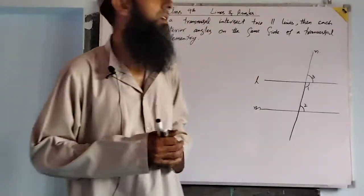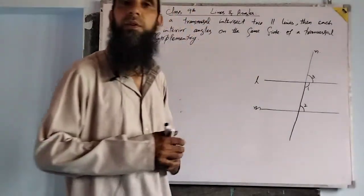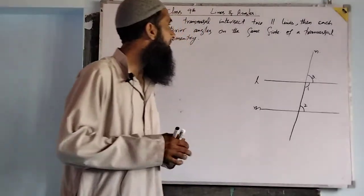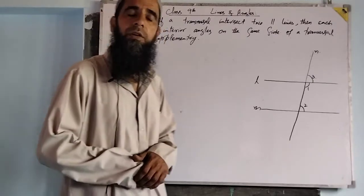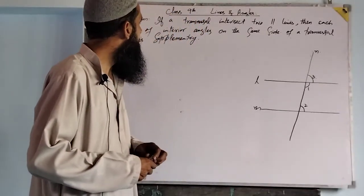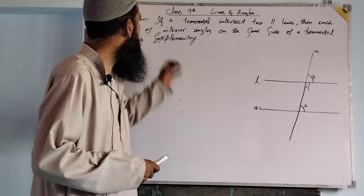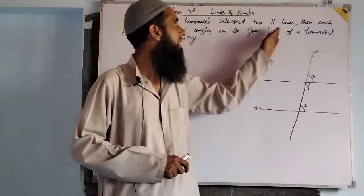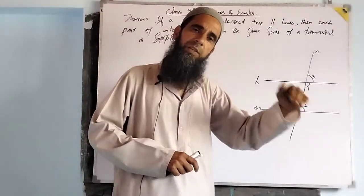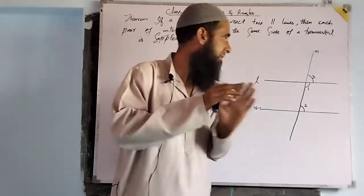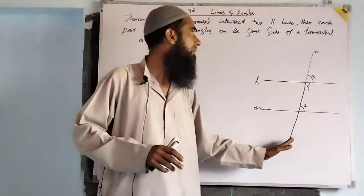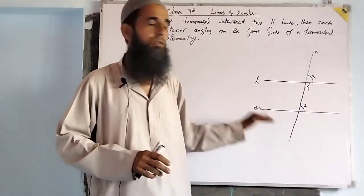Dear students of 9th class, today we will discuss one of the important terms from the chapter Lines and Angles. We discussed a term in the previous lecture as well. Today's term is: if a transversal intersects two parallel lines — we have two parallel lines LM and a transversal NB intersecting these two lines.